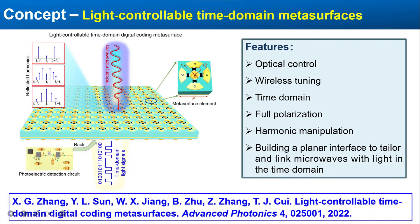Here, we present a light-controllable time domain digital coding metasurface that can be adopted to control microwave reflection spectra by light. This metasurface platform is implemented by integrating a high-speed photoelectric detection circuit into a full-polarization programmable metasurface. On this platform, the microwave reflection phase can be changed by light intensity in real-time.